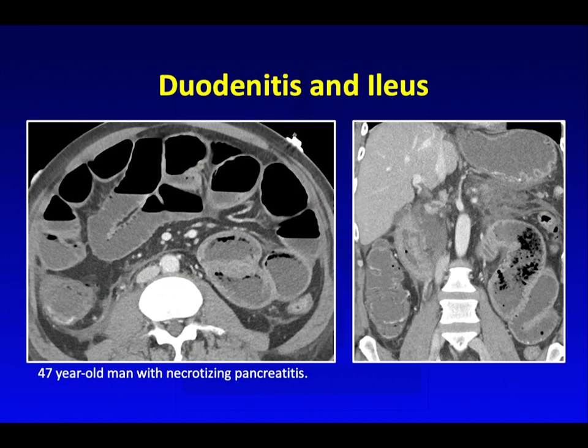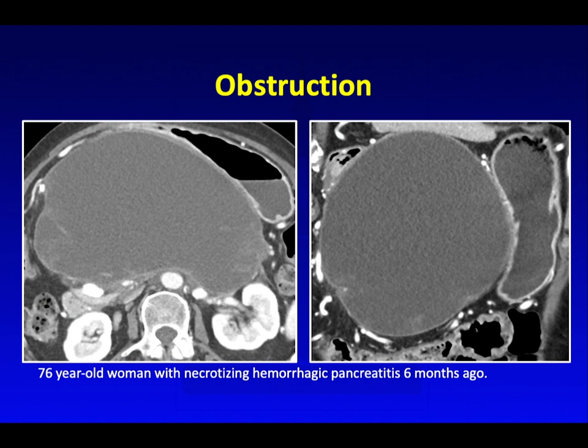Here are some examples of duodenitis and ileus. This is a patient with necrotizing pancreatitis — on the coronal image, there's very poorly enhancing pancreas. In the adjacent duodenal C-loop, you see marked bowel wall thickening, and then more globally within the small bowel, you see diffuse air-fluid distension throughout, consistent with ileus. These fluid collections can also cause mechanical obstruction due to mass effect, such as this patient with a very large fluid collection basically compressing the gastric outlet, who came in with symptoms of gastric outlet obstruction.